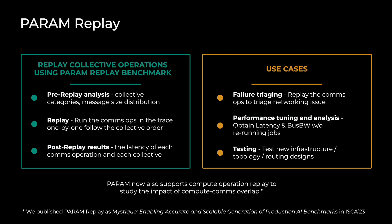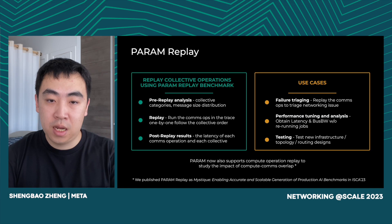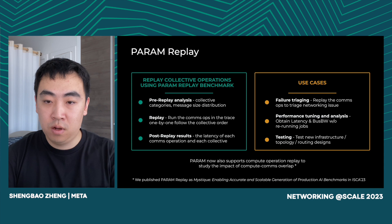PARAM replay allows us to replay collective operations from a trace. There are three stages in a replay. Before replaying, PARAM will analyze the collective categories and message size distribution. Then PARAM will replay the comms operations one by one following the collective order and collective size. After the replay, PARAM will summarize the latency of each comms operation and each collective type. PARAM replay has multiple use cases: we can replay the comms operation to diagnose network issues, obtain the latency and bandwidth for performance tuning and analysis, as well as test new infrastructure, topology, and routing design.